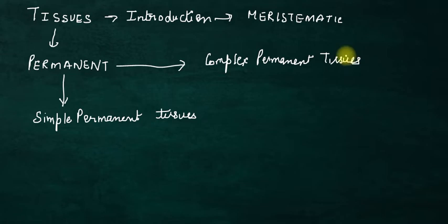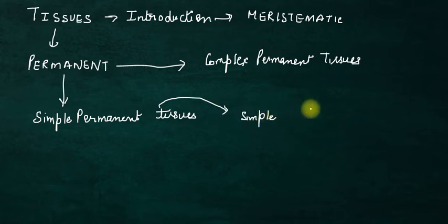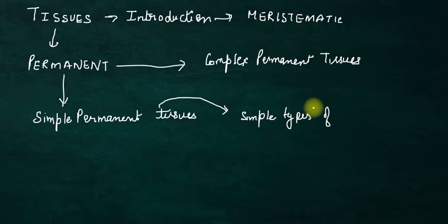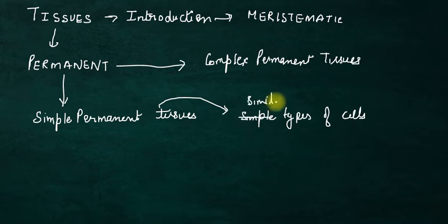So what is the difference between simple and complex permanent tissues? In simple permanent tissues, the cells are of similar types — they perform similar functions. This is very important to remember.